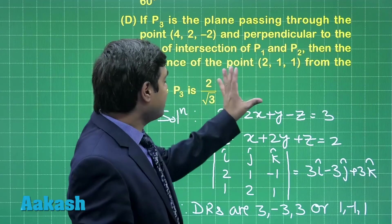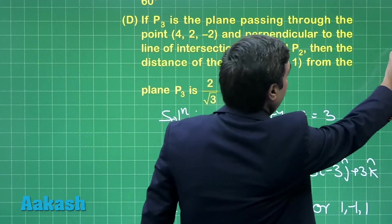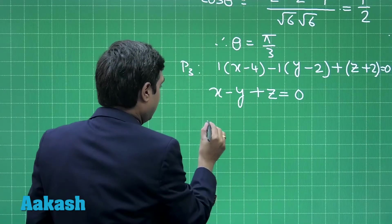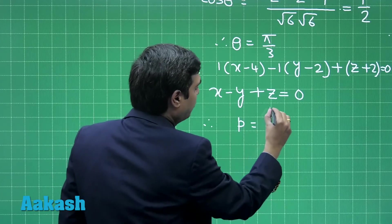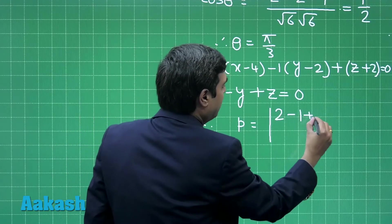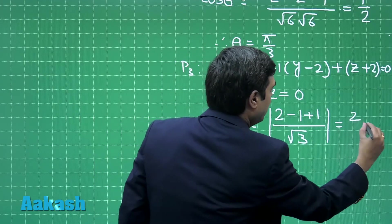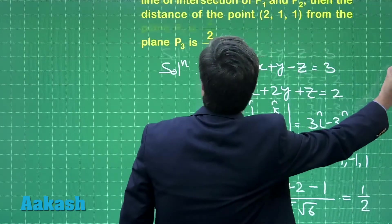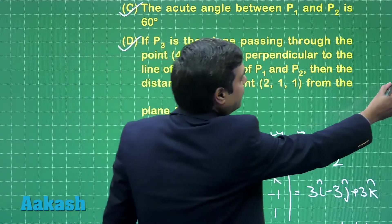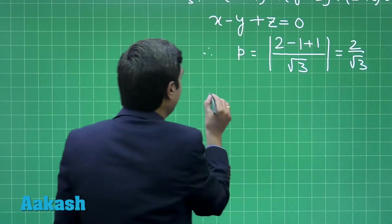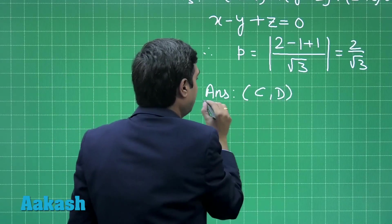Question is about the distance of P3 from (2,1,1) is 2 by root 3. Let us drop the perpendicular from (2,1,1). Therefore, length of perpendicular, say small p, is equal to (2 minus 1 plus 1) divided by root 3, or is equal to 2 by root 3 units. So option D is also correct. Hence, we can see the correct answer is given by option C and option D.